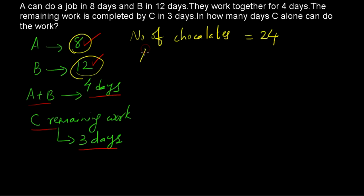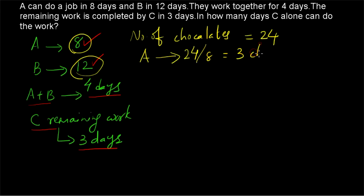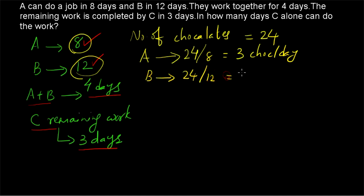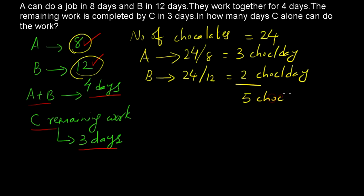Now we find out how many chocolates are consumed by A and B per day. A is taking 8 days to complete the work, and the work is 24 chocolates, so A will have 24 divided by 8 equals 3 chocolates per day. B is taking 12 days, so B will have 24 divided by 12 equals 2 chocolates per day. Together, A plus B will have 5 chocolates per day.